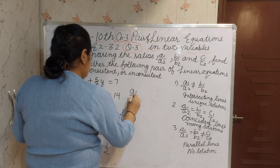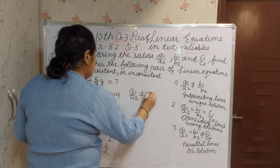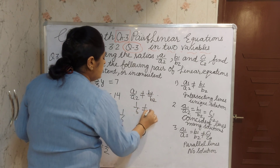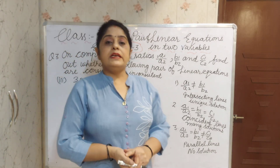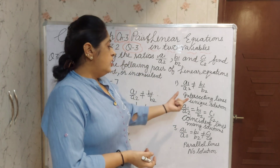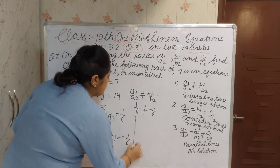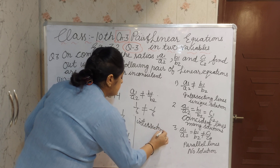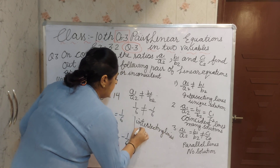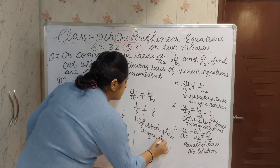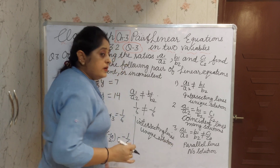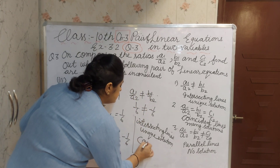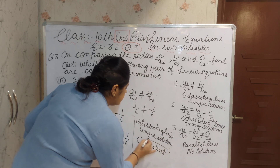A1 by A2 is not equal to B1 by B2: 1 by 6 is not equal to minus 1 by 6. When A1 by A2 is not equal to B1 by B2, they are intersecting lines — graphically intersecting lines with a unique solution. If you are getting one solution, it means they are consistent. Our answer is consistent.